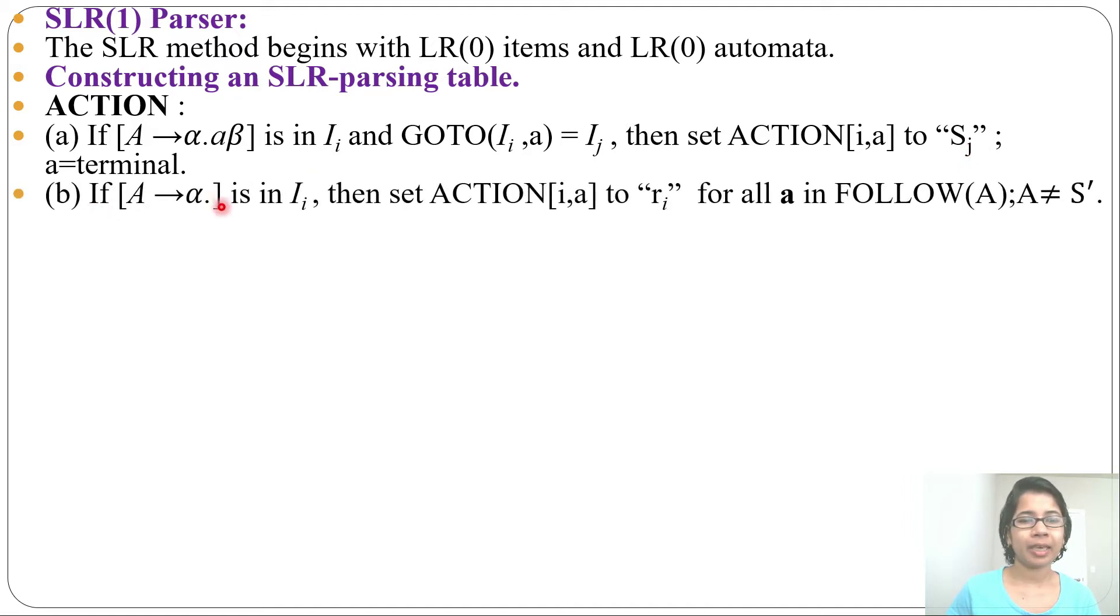Then second rule: if [A→α·] is in Ii, then set ACTION[i,a] to "ri" for all 'a' in FOLLOW(A) and A should not be S'. So this is different from LR(0) parsing table. In LR(0) parsing table what we are doing, we are keeping ri in all columns of ACTION part. But here what you will do: we'll keep ri for all 'a' in FOLLOW(A), means we need to find FOLLOW of left-hand side variable.